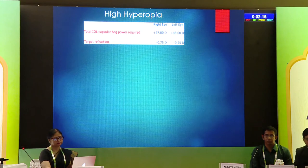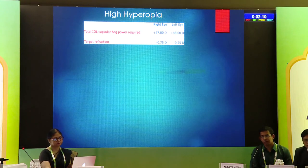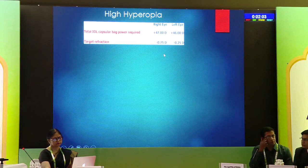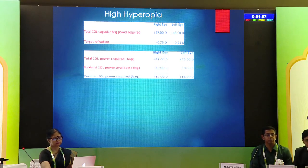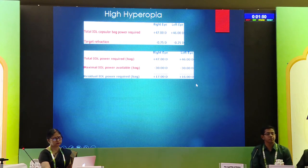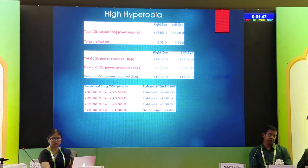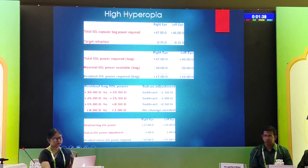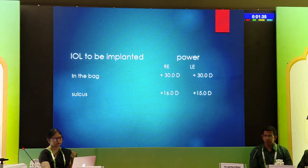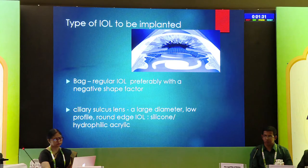This example is taken directly from Dr. Hill's website. Suppose the left (dominant) eye requires about +46 diopters to achieve emmetropia, and the non-dominant eye requires about +47 diopters for a target of -0.75. That is the total power required, but the maximum lens available is around 30 diopters. So you place +30 in the bag, and the remaining — approximately +16 or +17 — in the sulcus after applying the sulcus subtraction factor.